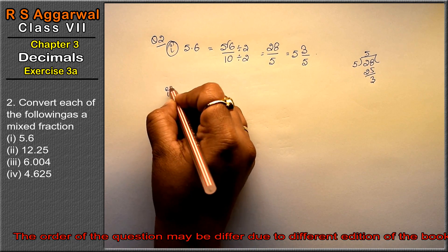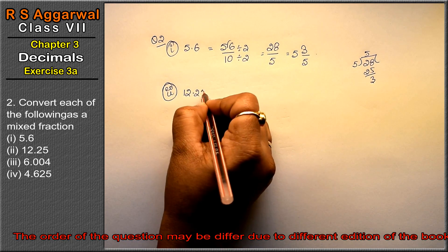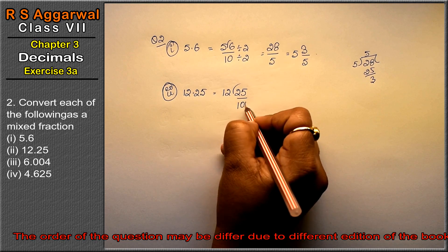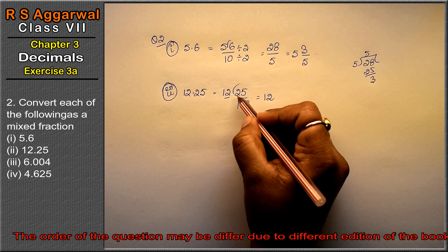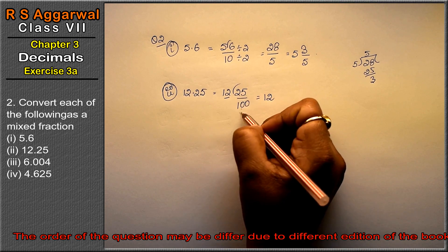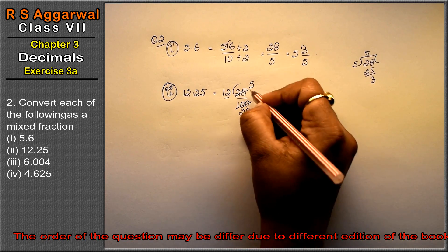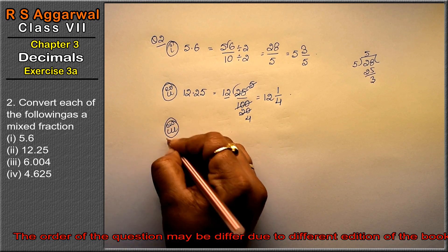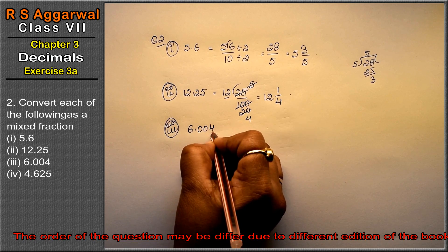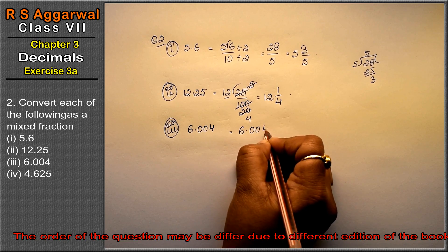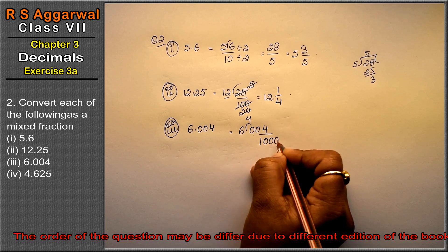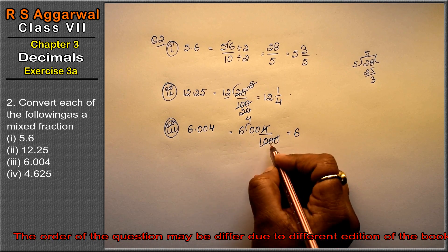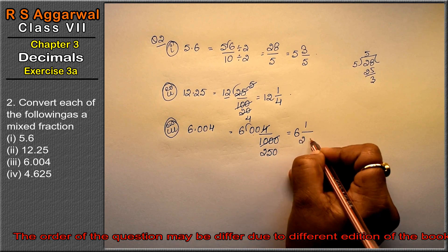One method is done. Now the second method — you can use either method. The next example is 12.25. We write 12.25 as 1225 over 100. Dividing by 4: 4 goes into 1225, giving us a whole number of 12 with remainder 25 over 100, which simplifies. The answer is 12 and 1 upon 4.